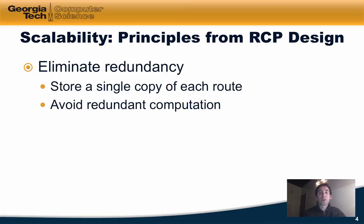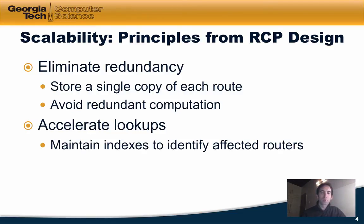Some scalability principles from the RCP design. The first is to eliminate redundancy. Rather than storing a routing table for every single router in the autonomous system, the RCP stores a single copy of each route, and if those routes are duplicated across routers, that redundancy can be represented by storing pointers into a common data structure. The second principle is to accelerate lookups by maintaining indexes to identify routers affected by a change in network conditions, such as a new route advertisement or a node or link failure.